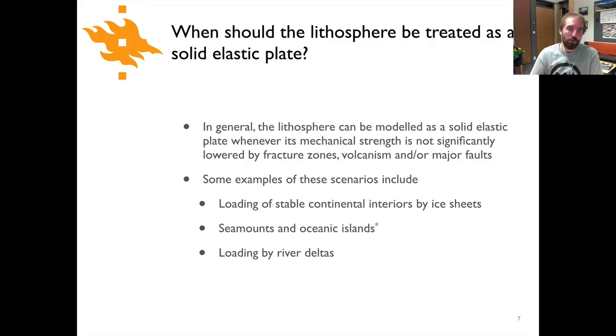And so some examples of this would consider things like loading of a stable continental interior by ice sheets, something that's certainly very relevant in Fennoscandia where we have basically a shield setting with a very stable continental interior where ice was deposited and fairly thick about 10,000 years ago. Seamounts and oceanic islands like we see for the case in Hawaii and I put an asterisk here. I'll mention why I put that there after we talk about the broken plate case. And then you can also think about cases where you've loaded a passive margin or something like that by river delta and fluvial sedimentation along a passive margin.